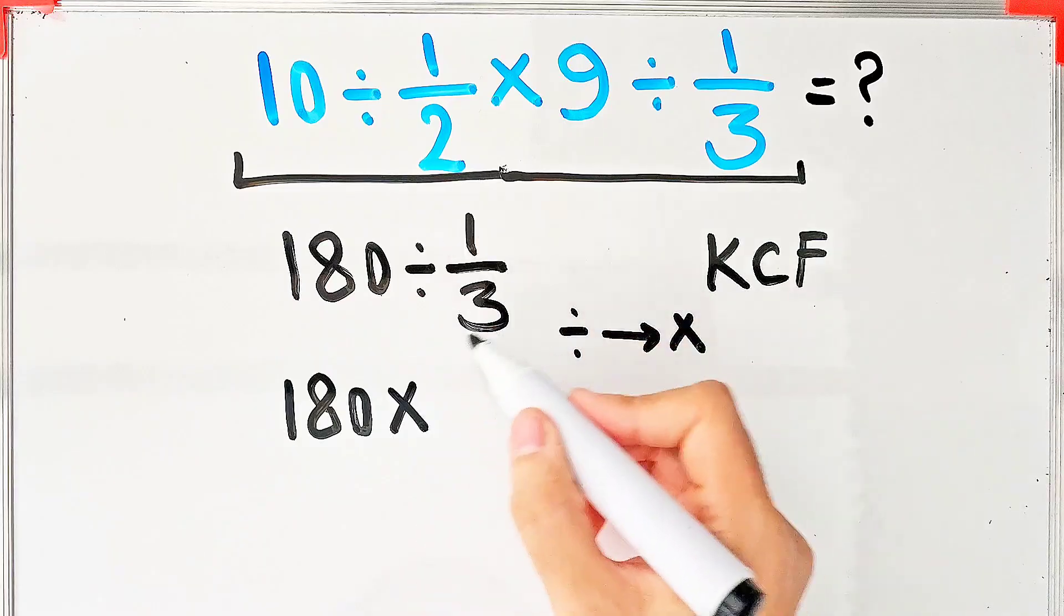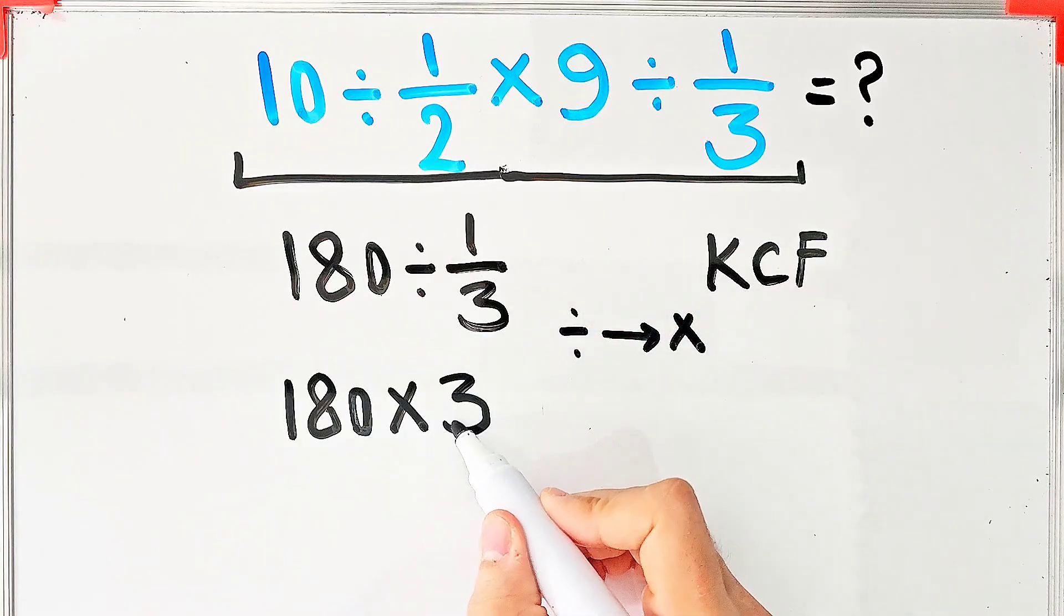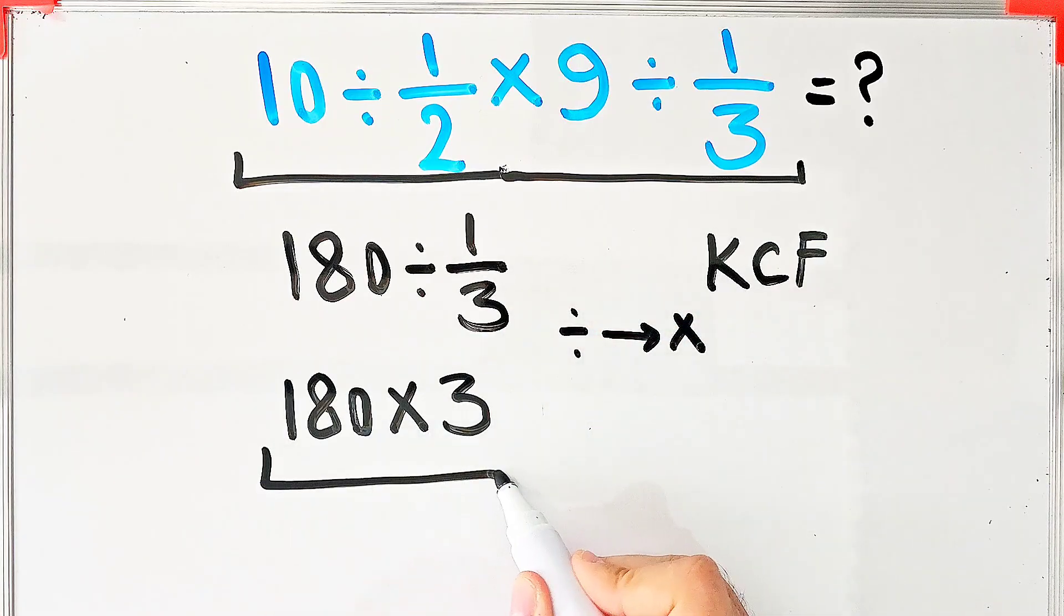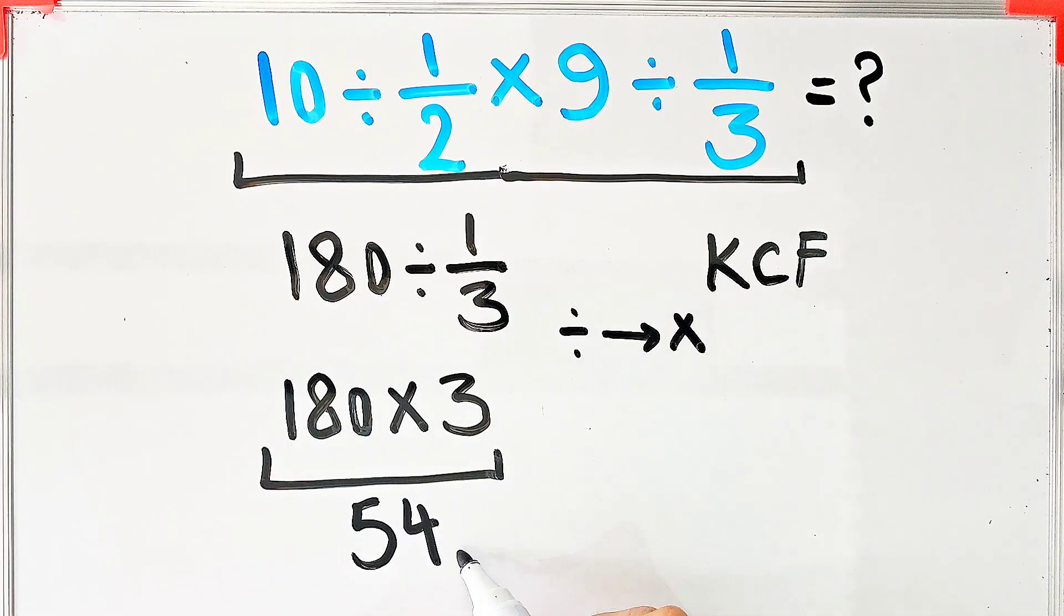Now we have 180 times 3. 180 times 3 equals 540. The final answer of this question equals 540.